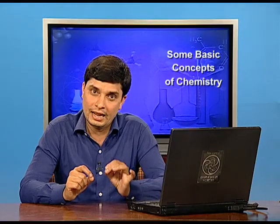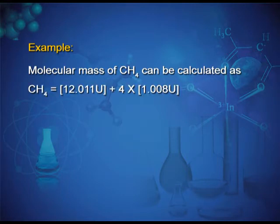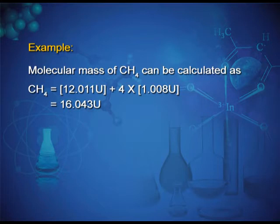For example, the molecular mass of CH₄ (methane): CH₄ contains 1 atom of carbon and 4 atoms of hydrogen. So the molecular mass = 12.011 u (carbon) + 4 × 1.008 u (hydrogen) = 16.043 u.